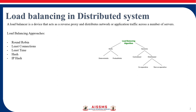Now in case of load balancing algorithms, the first category is static. The different approaches used are round robin, weighted round robin, and IP hash. Round robin distributes traffic to a number of servers in rotation by considering the DNS, that is the domain name system.